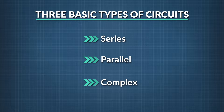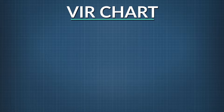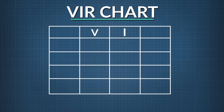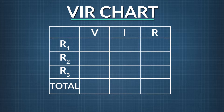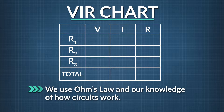To organize all the information involved in complicated circuits, it's helpful to use a chart called a VIR chart. A VIR chart is a table with blanks for the voltage, current, and resistance in our circuit. We use Ohm's law and our knowledge of how circuits work to fill in the blanks. Once all the blanks are filled in, we know everything there is to know about voltage, current, and resistance in our circuit.